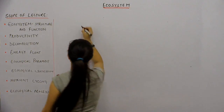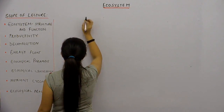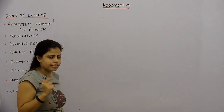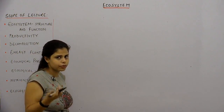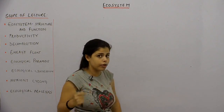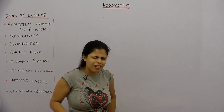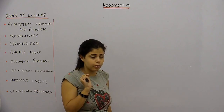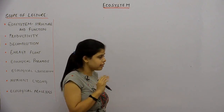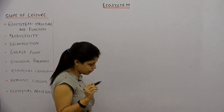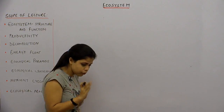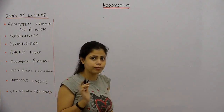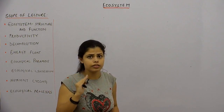So we have the energy flow. As you guys know, the sun is the basic source of energy for any ecosystem to operate, with few exceptions like the ecosystem of deep sea hydrothermal areas. Leaving those exceptions apart, sun is the basic source of energy for any ecosystem to operate.